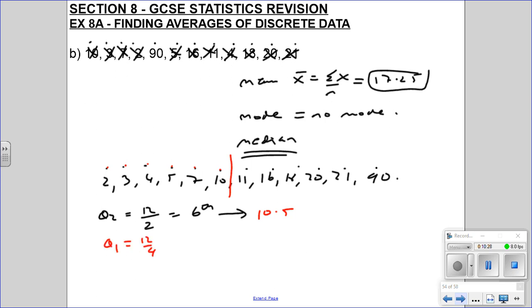Q1, so 12 over 4, that's the third value, but again, that's a whole number, so we need to go halfway between the third and the fourth number. So 1, 2, 3, draw a line. Between 4 and 5, halfway across is 4.5.